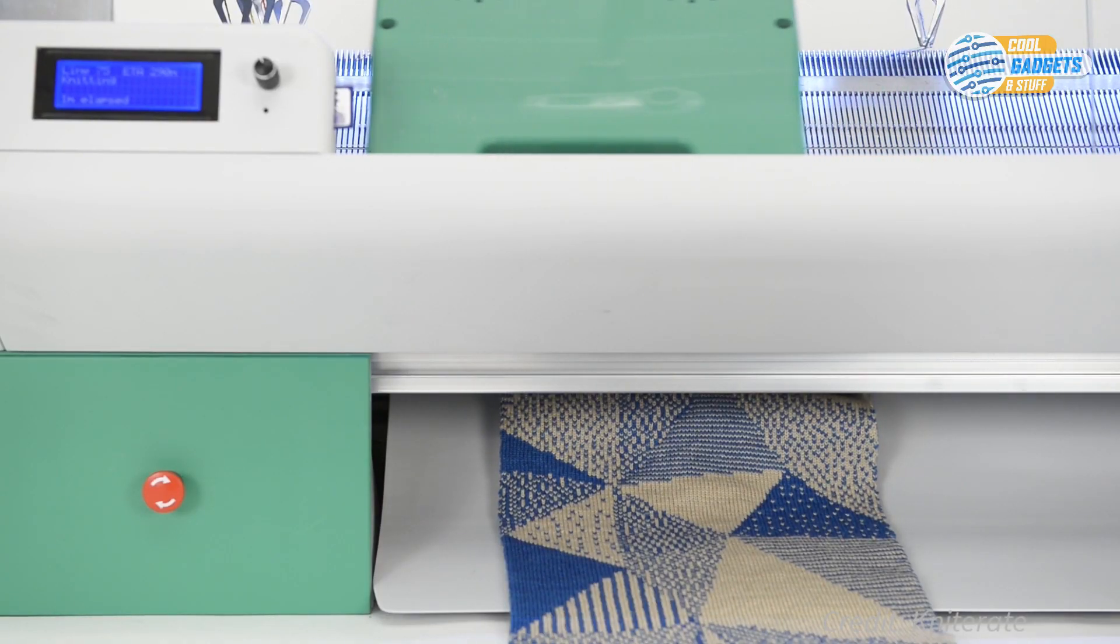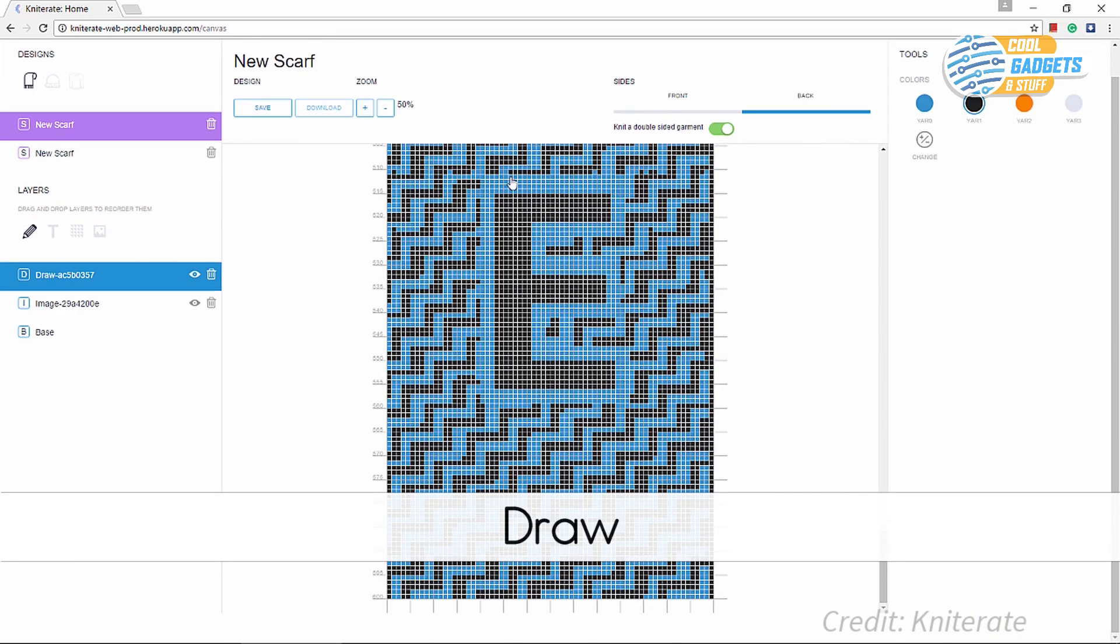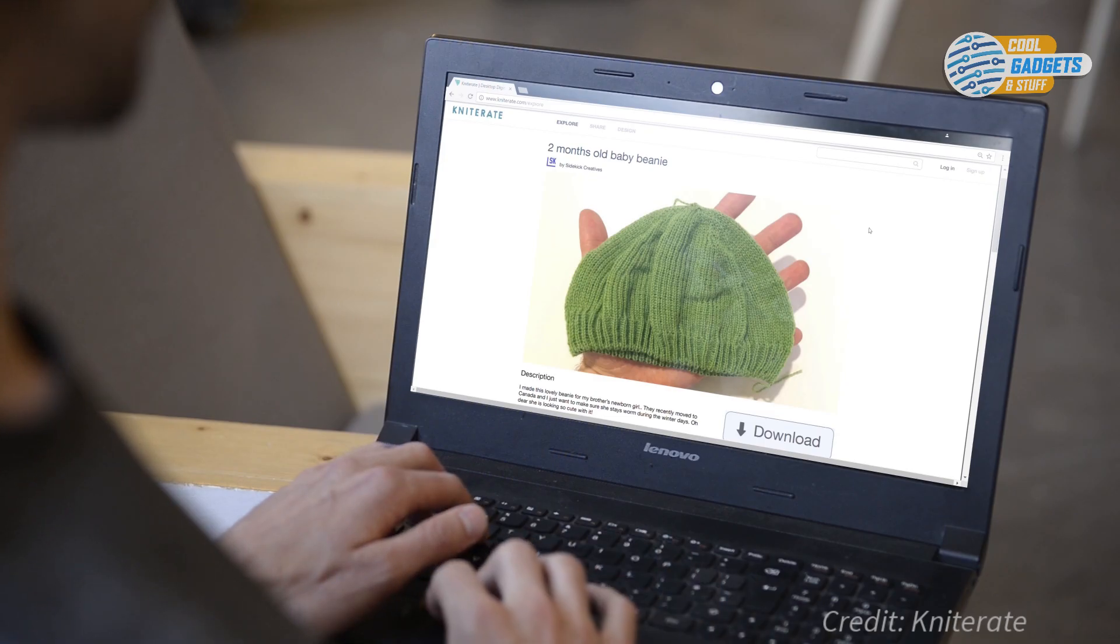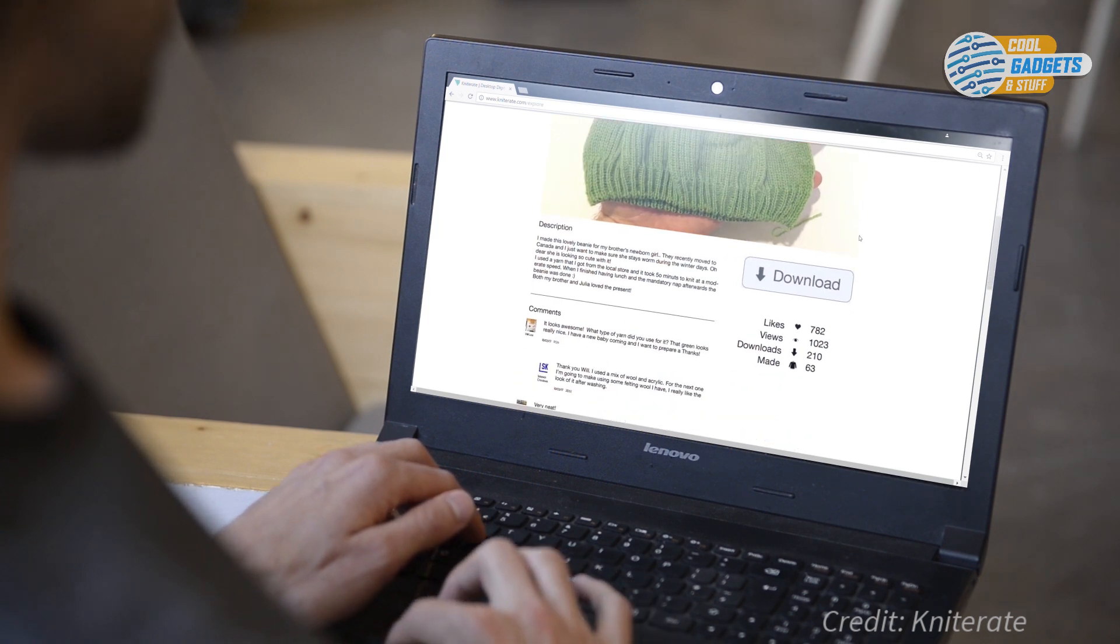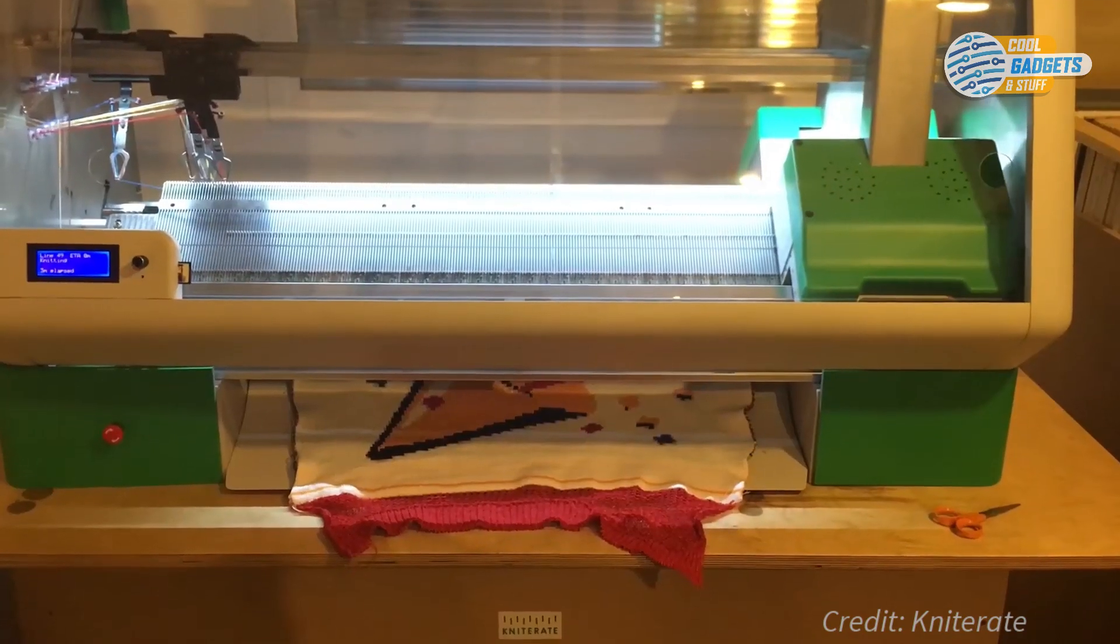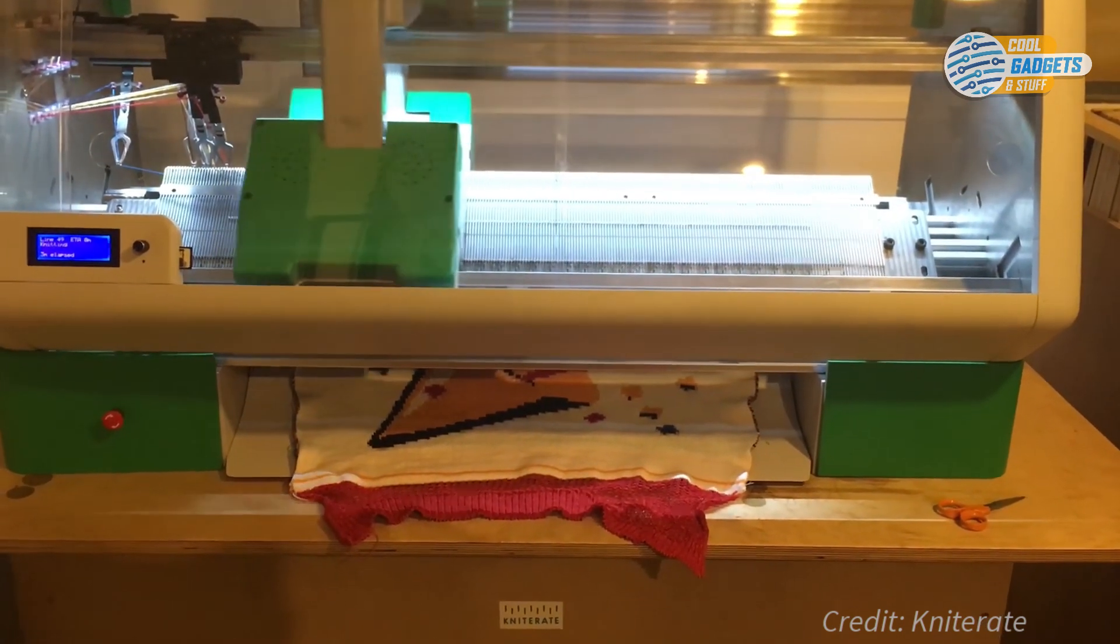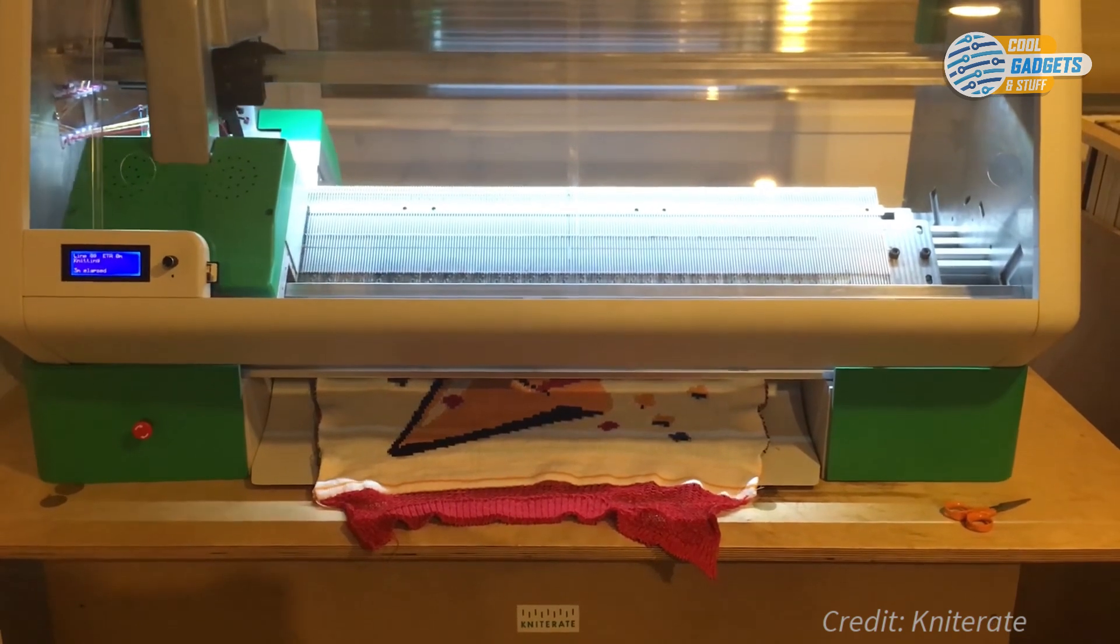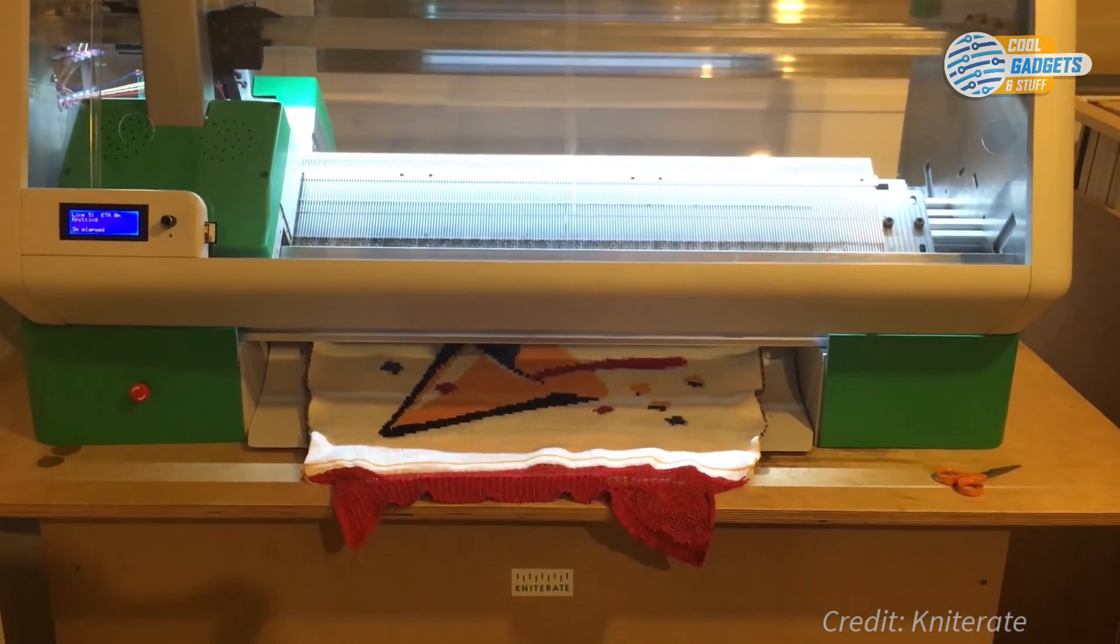Designs can be created from scratch using Knitter8's own software or imported from other design programs. You can also download designs and templates from Knitter8's extensive online library. You can change measurements, add text or images, draw and load patterns, and stitches. The software also comes with a community hub for designers and users to share their work.